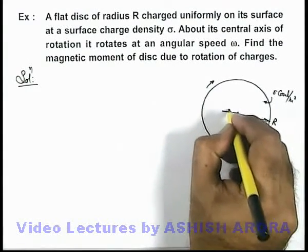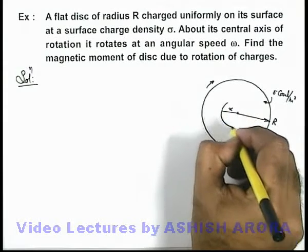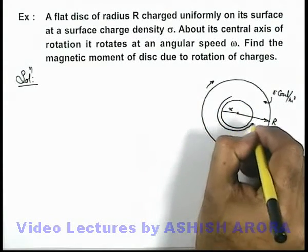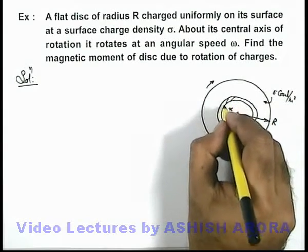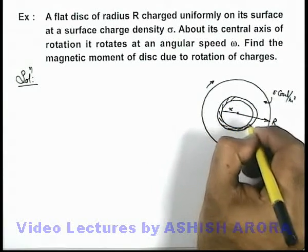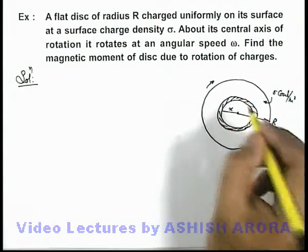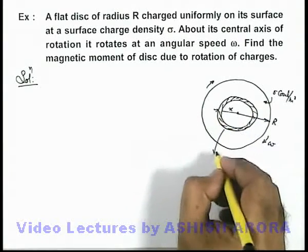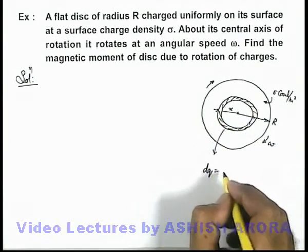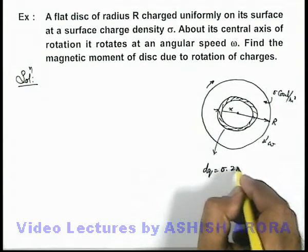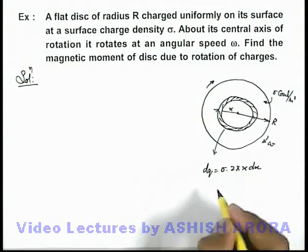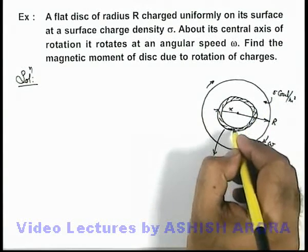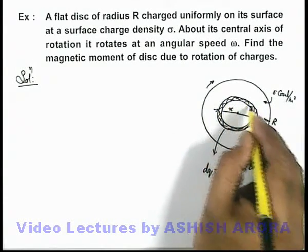For which we just consider an elemental ring of radius x which is of width dx, which I am drawing here in the figure. Then this ring will behave like an equivalent current which is also spinning. And if we calculate the charge on this element, this can be written as sigma multiplied by 2πx dx, because sigma is the surface charge density and 2πx dx is the area occupied by this elemental ring.